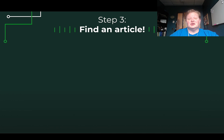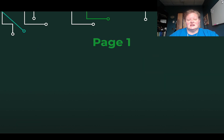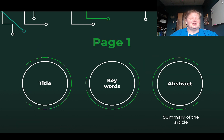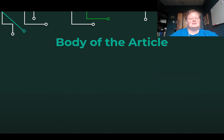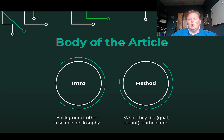Once you find an article using Google Scholar or MSU Libraries, let's talk about what you'll find in it. On the first page you'll find three things: the title, keywords, and the abstract — which is a summary of the research article and your go-to place. In the body, you'll find the introduction, which gives history and background, and then the method, which describes how they did the study — whether it was qualitative or quantitative, a survey, interviews, and so on.